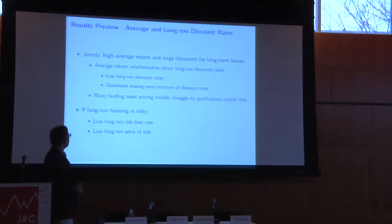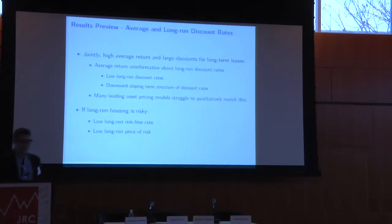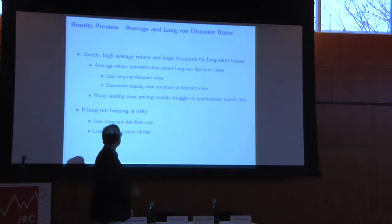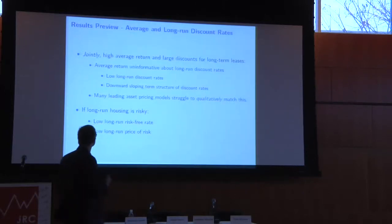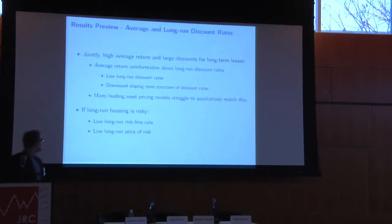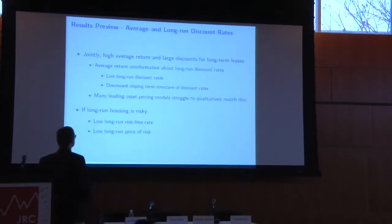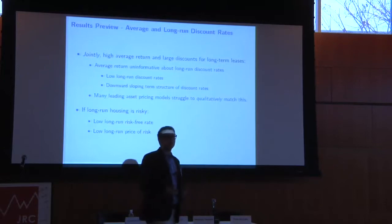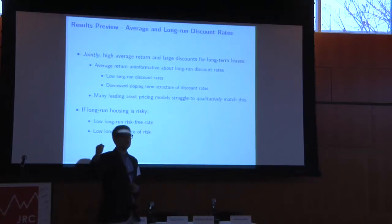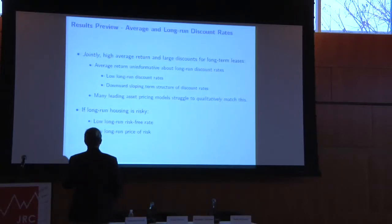What do we take from this? Jointly, the high average rate of return to housing and these large discounts for long-term leases suggest several things. First, just looking at the average return of housing is quite uninformative about the very long-run discount rate — that's the Gordon growth model failing. Second, it suggests long-run discount rates are actually very low and that there is a downward-sloping term structure of discount rates. Many leading asset pricing models struggle to even qualitatively match this — they would suggest an upward-sloping term structure, in direct contrast to what we find.